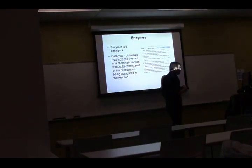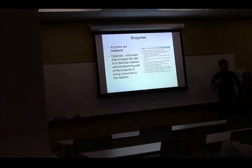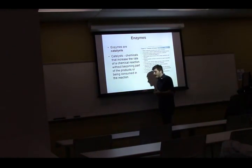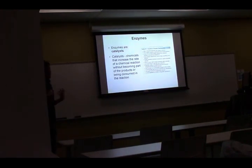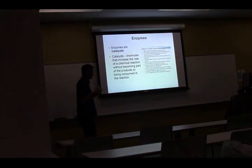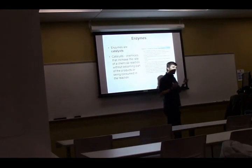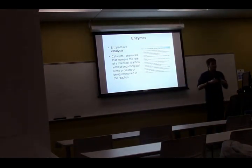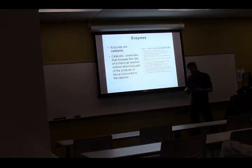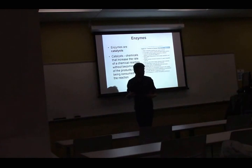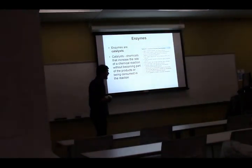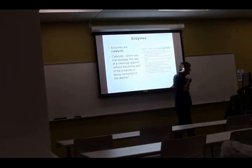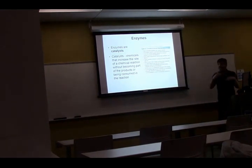For these reactions to occur within a cell, you need to get the ball rolling, and the way we do that is using something called an enzyme. Enzymes are biological catalysts. A catalyst is a molecule that allows a reaction to occur with less energy required, making the reaction much more efficient. In biological systems we say enzyme instead of catalyst. These enzymes are mostly made out of protein, and they're often made by the cell itself.